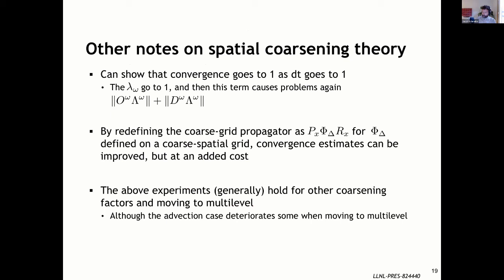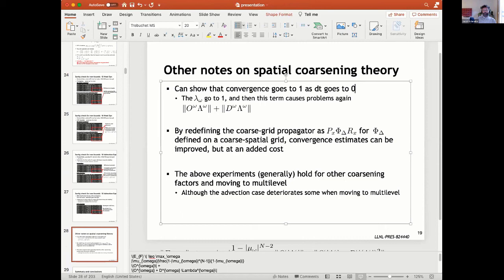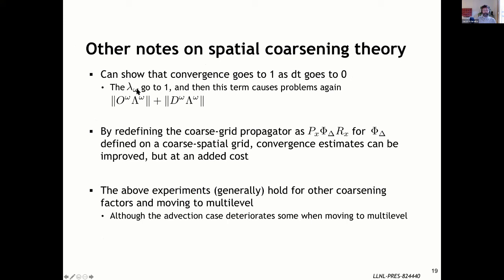Through this technique, you can show that convergence goes to one as dt goes to zero. As dt goes to zero, your fine grid eigenvalues go to one, and this causes problems whether you use F or FCF. You can redefine the coarse grid propagator by wrapping it with P_x and R_x on both sides, which can improve convergence somewhat, but at the cost of more coarsening and interpolation. The above experiments generally hold for other coarsening factors and when moving to multi-level, though the advection case does deteriorate at multi-level, whereas the parabolic case doesn't deteriorate much.